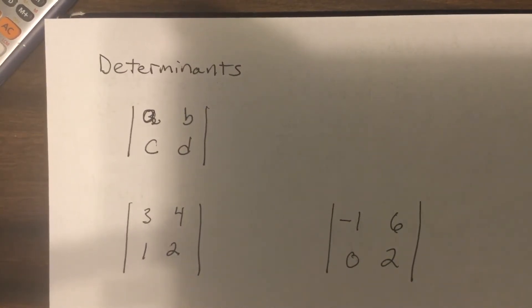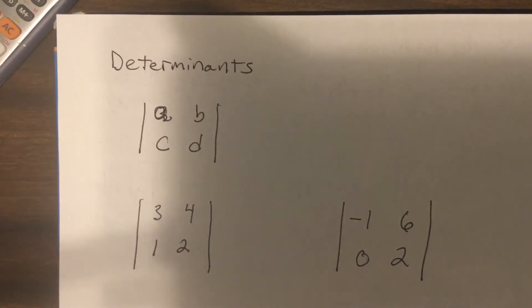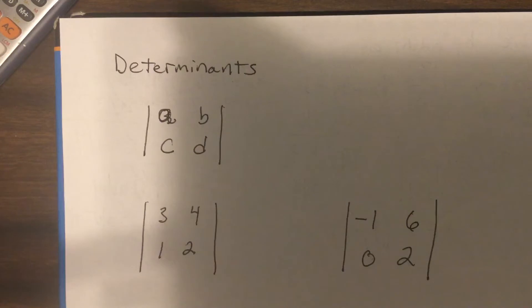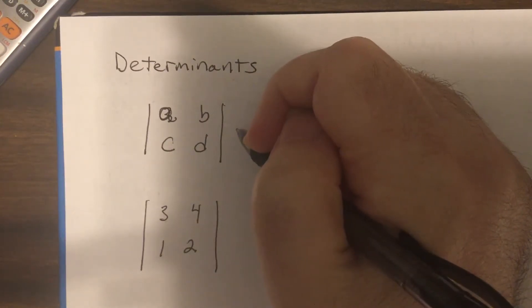Now we're going to start something called solving systems by using Cramer's rule. We're going to focus on two equations, two unknowns today. If time, we'll talk about three equations, three unknowns, but I don't know. This year's going by kind of fast.